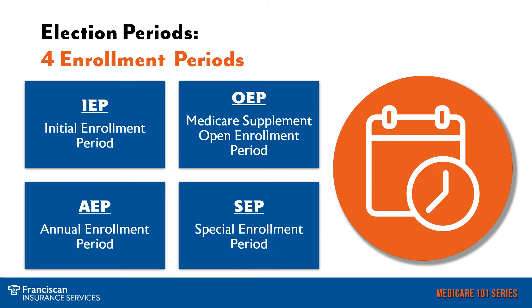There are four different election periods or enrollment periods. The first one is the initial enrollment period when you first turn 65. Then there is the Medicare Supplement open enrollment period. There's the annual enrollment period, which happens every year from October 15 to December 7. And then there are special enrollment periods. There are several special enrollment periods that someone could qualify for.